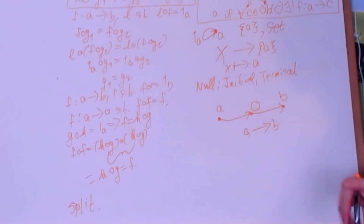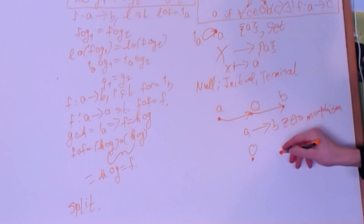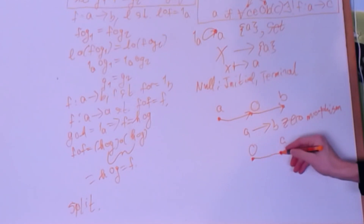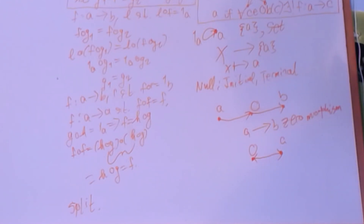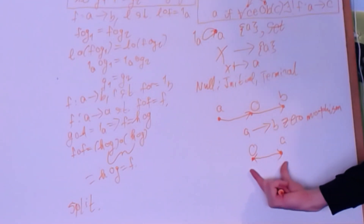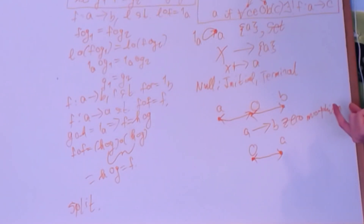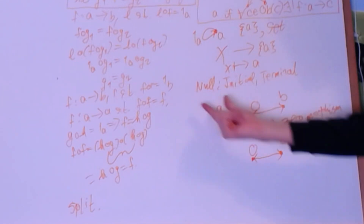We call the morphism going through the null element a zero morphism. Now considering the arrows between the null element and some other object: we have an arrow going each way, and due to the uniqueness requirement these must be inverses of each other. So every single object of the category is isomorphic to the null element. By transitivity, any two objects of the category must therefore be isomorphic to each other — all objects in a category with a null object are isomorphic.